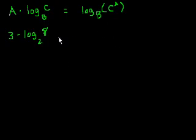of 8. So this property tells us that this is going to be the same thing as logarithm base 2 of 8 to the third power. And that's the same thing. Well, that's the same thing as, well, we could figure it out.